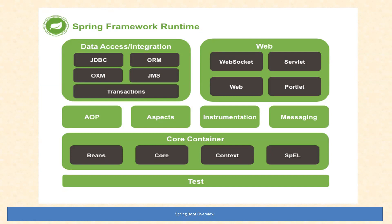Coming to data access and integration, we have JDBC — Java Database Connectivity — ORM — object-relational mapping — object-XML mapping, JMS — Java Message Service — and transactions. We can do transaction management whenever we are integrating with any database. We also have test support — test-driven development, TDD, is possible with Spring. We have the provision to write test cases and run them as part of our application itself.